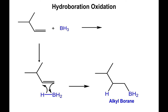This is also driven by thermodynamics. The energy of the carbon-hydrogen bond is better than the energy of the boron-hydrogen bond, so this is driven by that equilibrium. Like what happened with mercury, boron — the bigger atom — ends up on the carbon that is least substituted, or that has the least steric bulk. The hydrogen ends up on the carbon that is most substituted, so you end up with this intermediate.